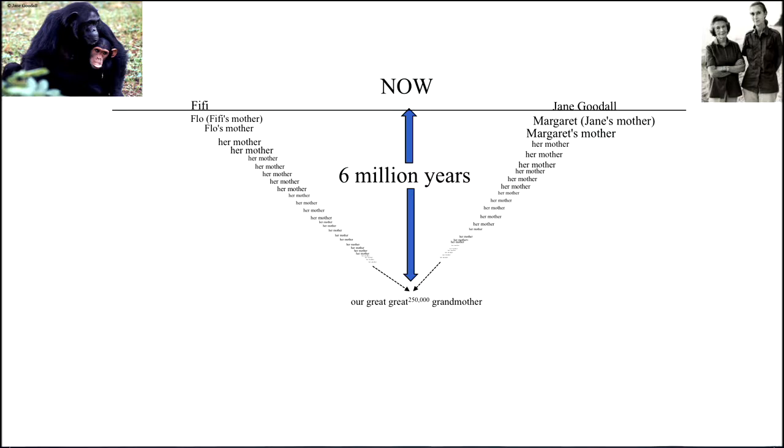So here's Jane and her mother in the upper right and a chimpanzee Fifi and her mother Flo on the left. Picture Jane holding her mother Margaret's hand, Margaret holding her mother's hand, Margaret's mother holding her mother's hand, and you can think of this long chain of mothers. Similarly on the left, Fifi holding her mother Flo, Flo holding her mother's hand, etc. A long chain of chimpanzee and human mothers, and in six or seven million years down at the bottom they will merge at their great-great 250,000 greats mothers.